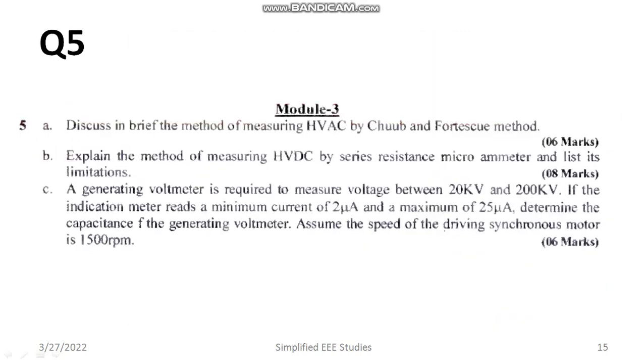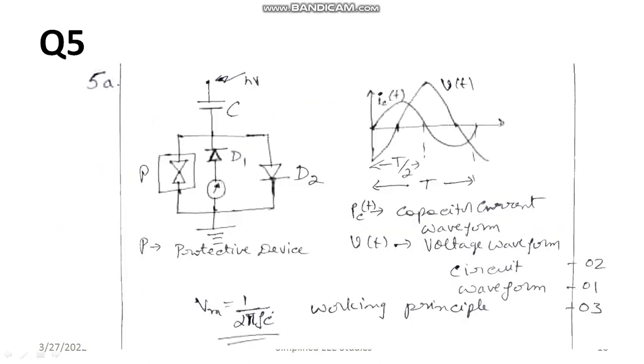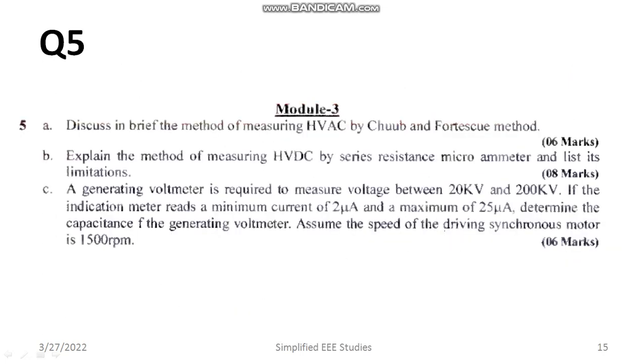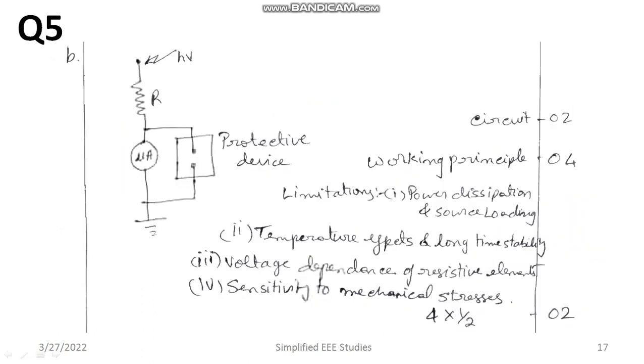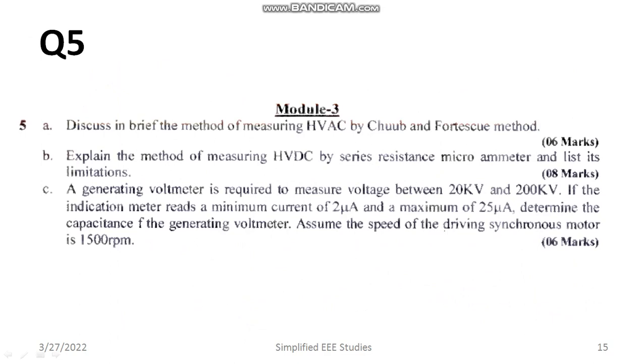Question number 5: Chubb and Fortescue method. It is having the weightage of six marks. How to write? Diagram and waveform is must. It is having the weightage of two marks. Then the equation, simple equation and working principle, it is having the weightage of three marks. Then the total will be six, two plus one plus three. That is the division. Then explain the method of measuring HPDC by series resistance micrometer and mention the drawbacks. Circuit diagram two marks. Working principle four marks. And limitation two marks. Likewise the marks has been divided. You can plan accordingly.